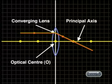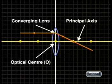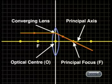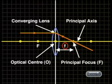Any ray of light drawn parallel to the principal axis will strike the lens and be bent so that it meets the principal axis at a single point called the focal point or principal focus, labeled capital F. The distance from the optical center O to the focal point F is called the focal length of the lens, labeled small f. Now — does the position of the object have any influence on the image? Let's look at some ray diagrams to find out.